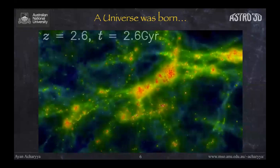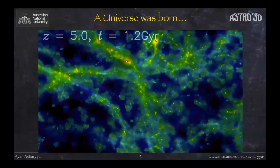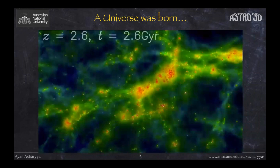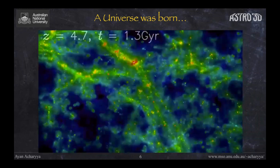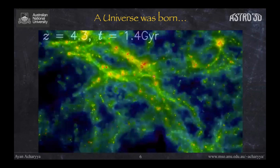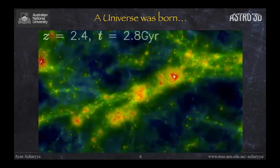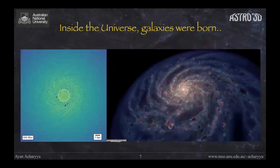Let's first look at a simulation of a large chunk of the universe. The universe was created after the Big Bang about 13.8 billion years ago and has been growing and changing since. In the video, each cluster of dots is actually a galaxy. They are of different colors — yellow, green, red — and the redder they are, the more metals, more carbon, more oxygen are present in them. Now let's zoom in and look at individual galaxies.